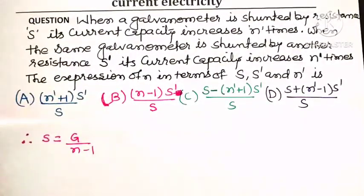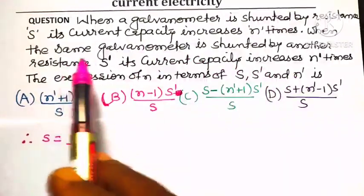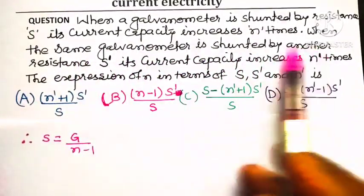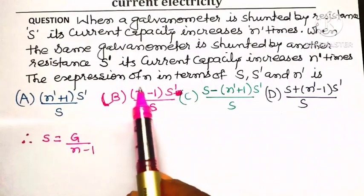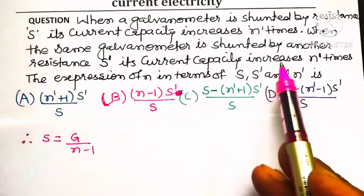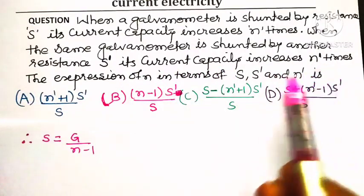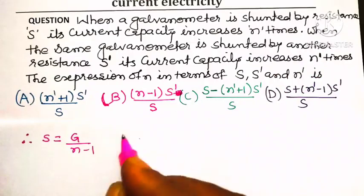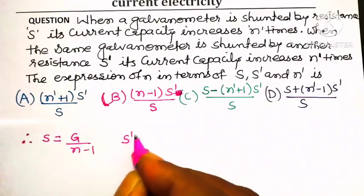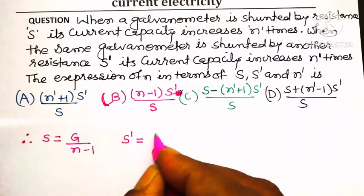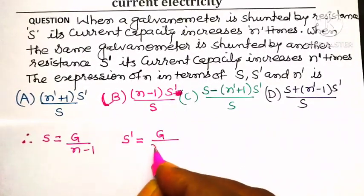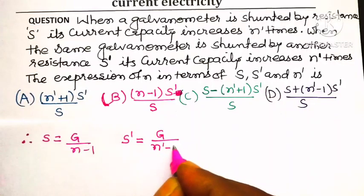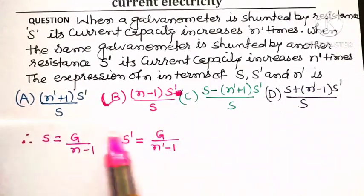Later on, it is given that when the same galvanometer is shunted by another resistance S', its current capacity increases n' times. This means S' = G/(n' - 1).